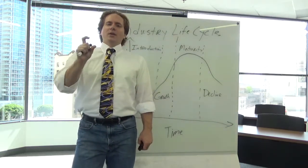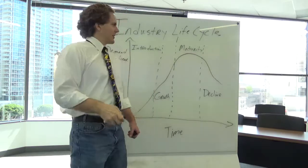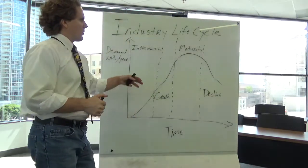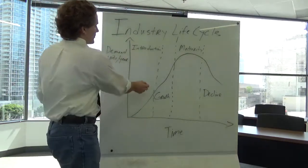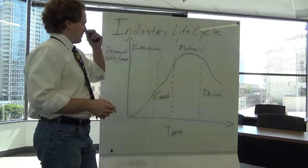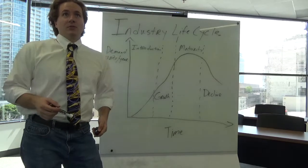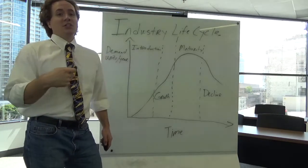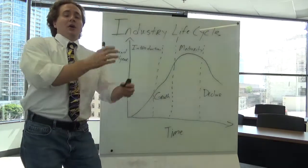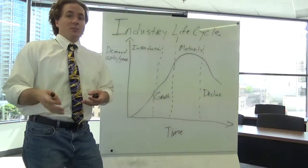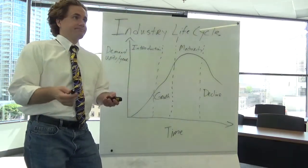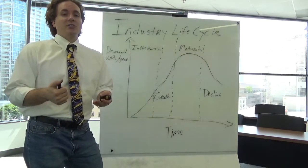Every single one of those kind of sub-industries that they have, like mouthwash versus women's cosmetics, would have their own product life cycle. Because they would all kind of belong to different industries, right? Health and beauty participates in a very different industry than does dental hygiene.